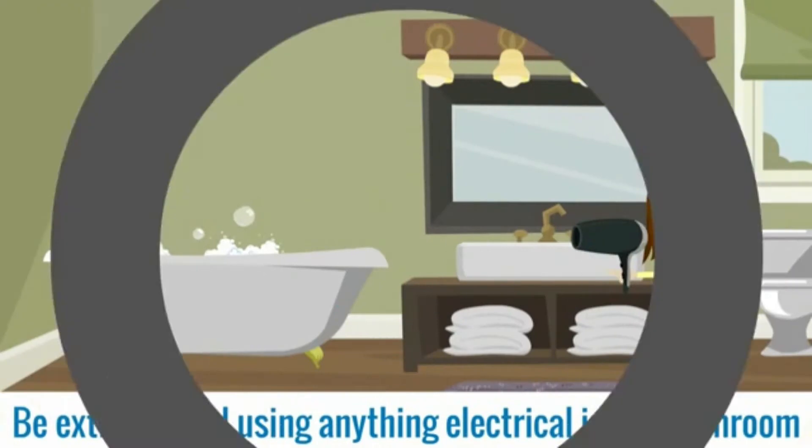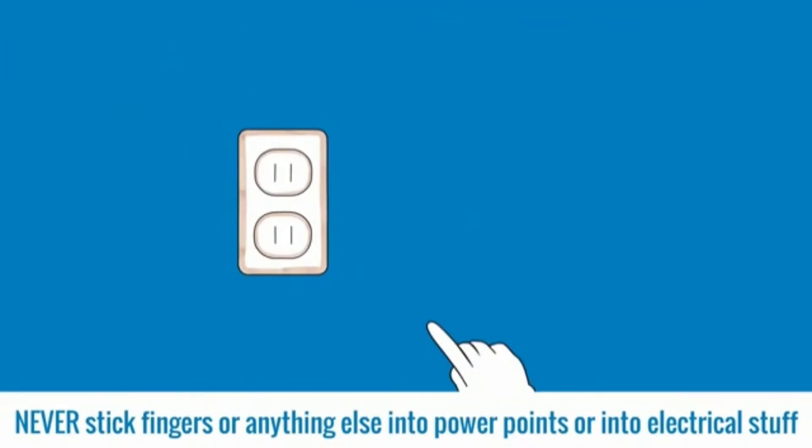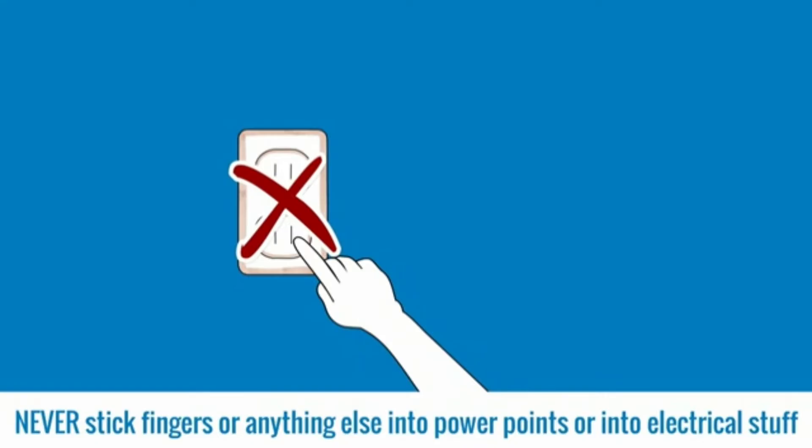Be extra careful when using anything electrical in the bathroom, like hair dryers, and always store electrical things away from the bath, sink or shower. Never stick fingers or anything else into power points or into electrical stuff. For example, never stick a knife into a toaster.